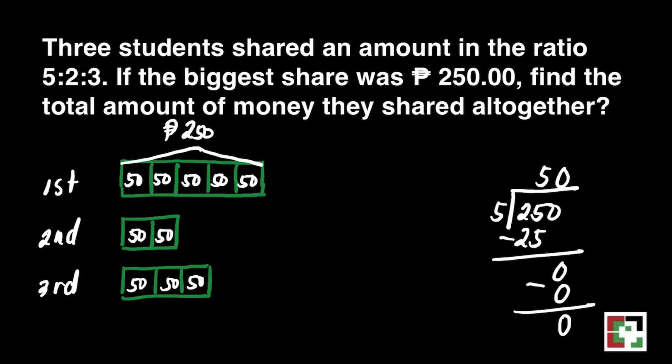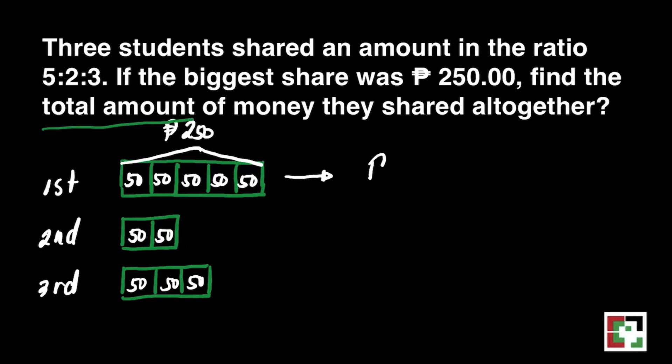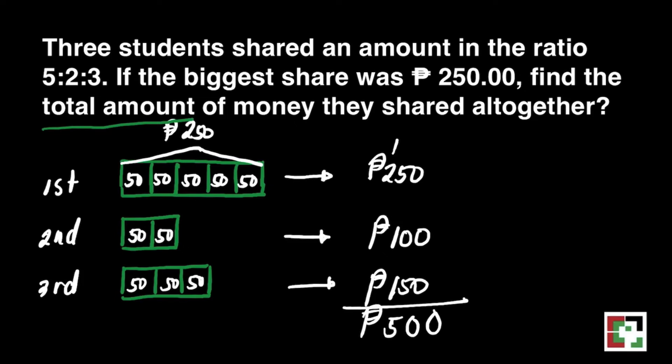The problem says that we're looking for the total amount they share. So we will just add all the values of the boxes for each student. For first student, that's 250. For second, that's 100. And the third, that's 150. We will just add. And we'll get 500. Therefore, our answer for this question is 500 pesos.